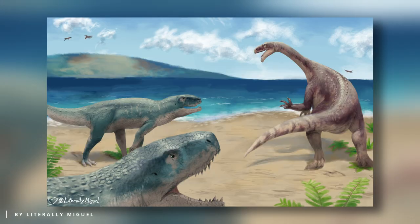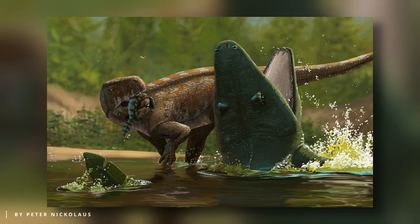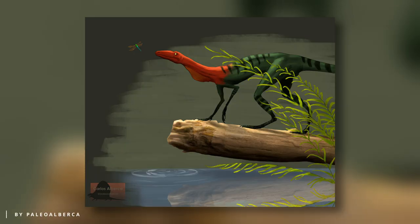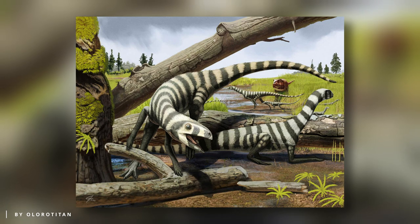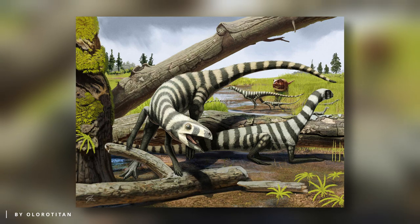So, what exactly defines a dinosaur, and where did they come from? Their story begins with Archosauria, a group of diapsid sauropsids encompassing all crocodilians, pterosaurs, and both avian and non-avian dinosaurs. The earliest known members of this group emerged in the early Triassic period, around 250 million years ago, following the catastrophic Permian-Triassic extinction event. Then, during the middle to late Triassic, approximately 10 to 15 million years later, Archosauria diverged into the lineage known as Dinosauria.